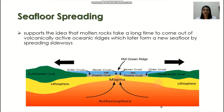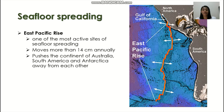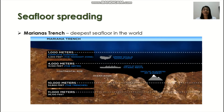This theory also supports the idea that molten rocks take a long time to come out of volcanically active oceanic ridges, which later form a new seafloor by spreading sideways. Here we have the East Pacific Rise, which is one of the most active sites of seafloor spreading — it moves more than 14 centimeters annually. We can't feel the movement underground, but there are actually movements happening every day. The East Pacific Rise pushes the continents of Australia, South America, and Antarctica away from each other, and possibly in the future you would see more separation of the continents. Another product of seafloor spreading is the Mariana's Trench, the deepest seafloor in the world.